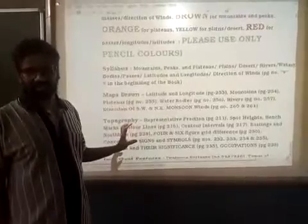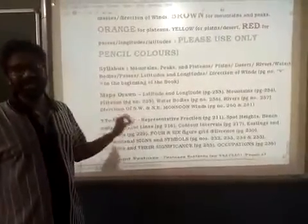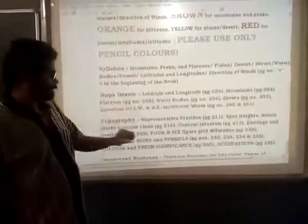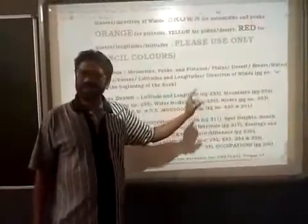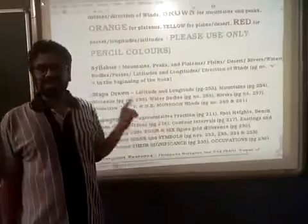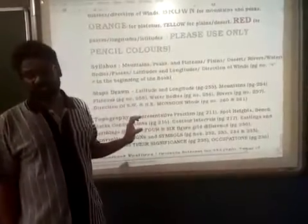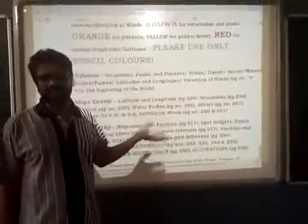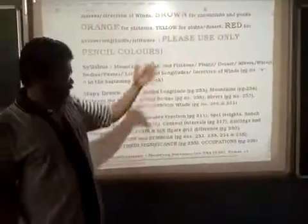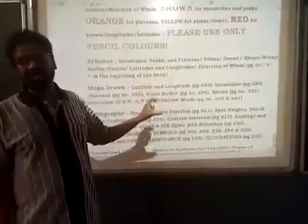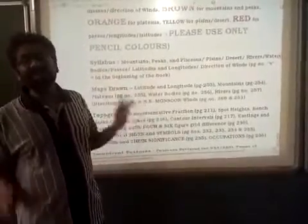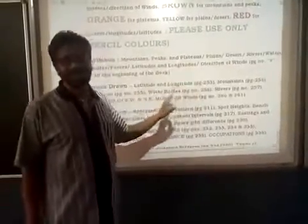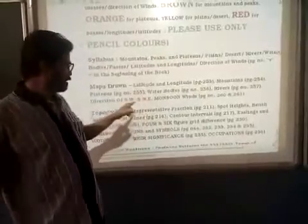This is for your map pointing. Since you have already done map pointing in Standard 9, regarding the rivers — you will use the maps given by the ICSC board. These maps are not found in the market, so please try to download the maps from the website. I will also show you. You will find the maps and the rivers are already drawn — you don't have to draw the rivers yourself. The river names are given in the syllabus at the beginning of the book.